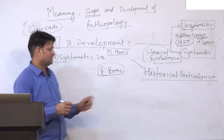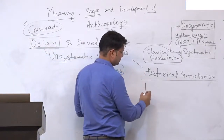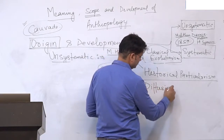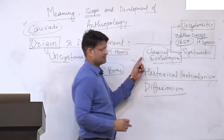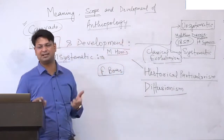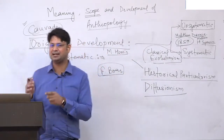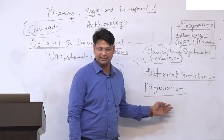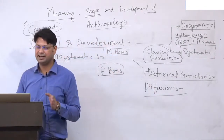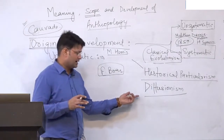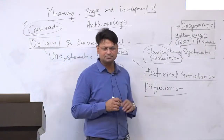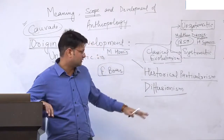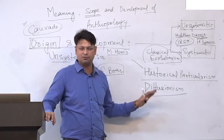After historical particularism came the school of diffusionism, which, like classical evolutionism, evolved in three centers: America, Britain, and continental Europe. This school argues that cultural traits evolve at specific places and then spread to others, though the three centers had variations in their approaches.